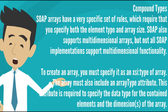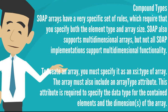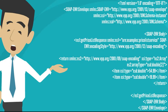SOAP arrays have a specific set of rules requiring that you specify both the element type and array size. SOAP also supports multi-dimensional arrays, though not all SOAP implementations support multi-dimensional functionality. To create an array, you must specify it as an XSI type of array, and the array must include an array type attribute. This attribute specifies the data type for the contained elements and the dimensions of the array. Here is a sample SOAP response with an array of double values.